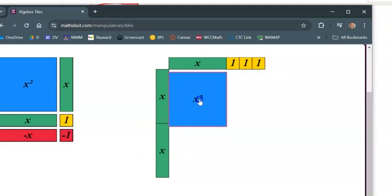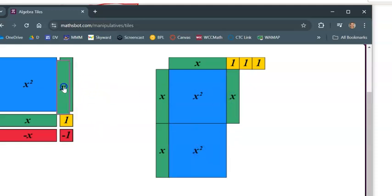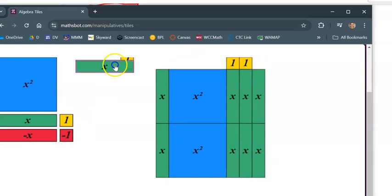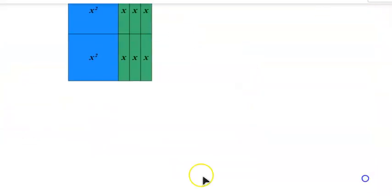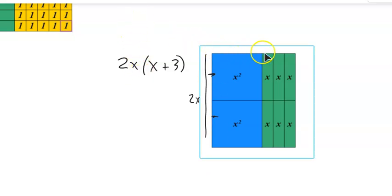Well, x times x is x squared. So these x squareds will fill in here. And then x times one is x. So these x's will fill in here. Pull these out of here. Because they were just my frame. So again, notice, this side is two x, right? This side's x, this side's x. So this is my two x. That's how long this side is. This side is x plus three long.